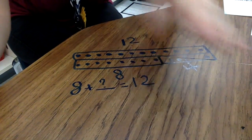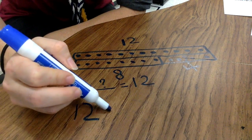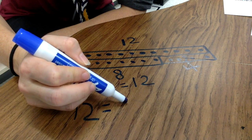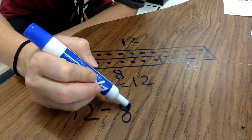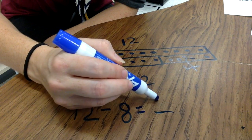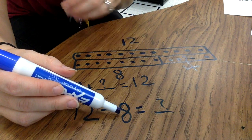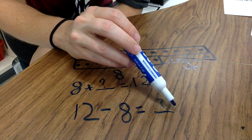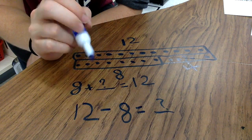Another possible number sentence that could be used to solve would be: 12 minus 8 equals something. I could start with the whole — the 12 cookies — and take out the eight cookies that I know are shaped like turkeys, and then what I'm left with would tell me how many of the cookies are not shaped like turkeys. Those are two examples of number sentences that could be used to solve this story problem. Writing a matching number sentence is a really important first grade skill that goes along with solving the story problems. Thank you.